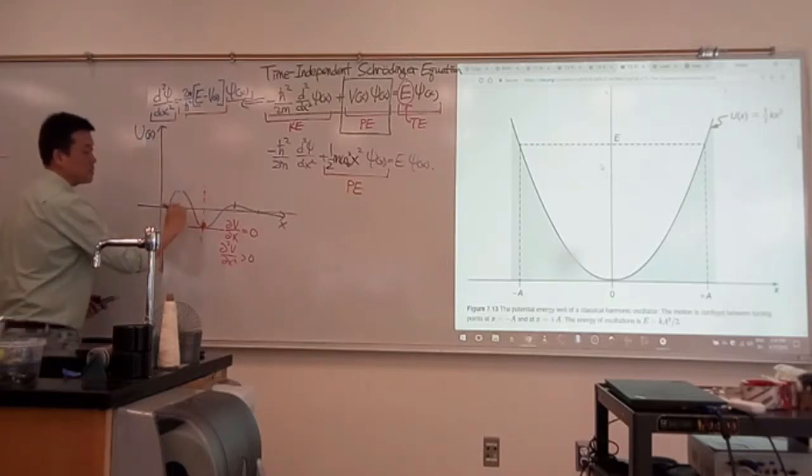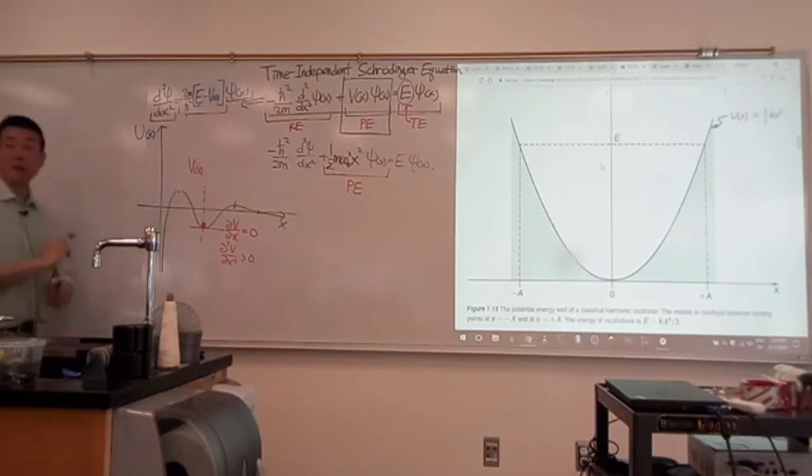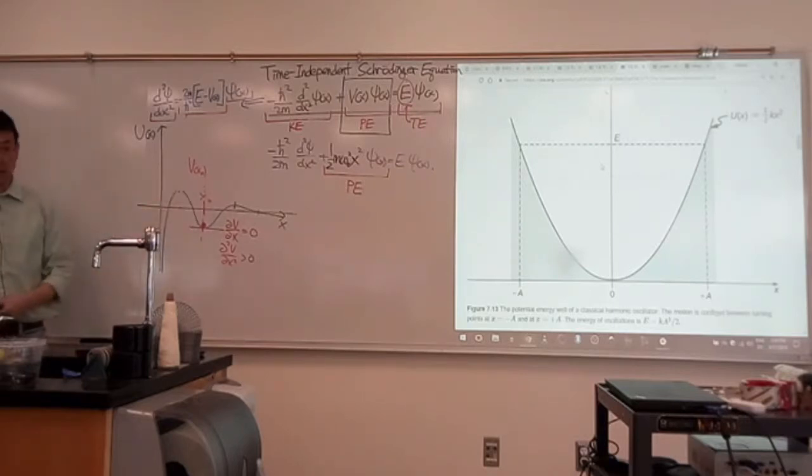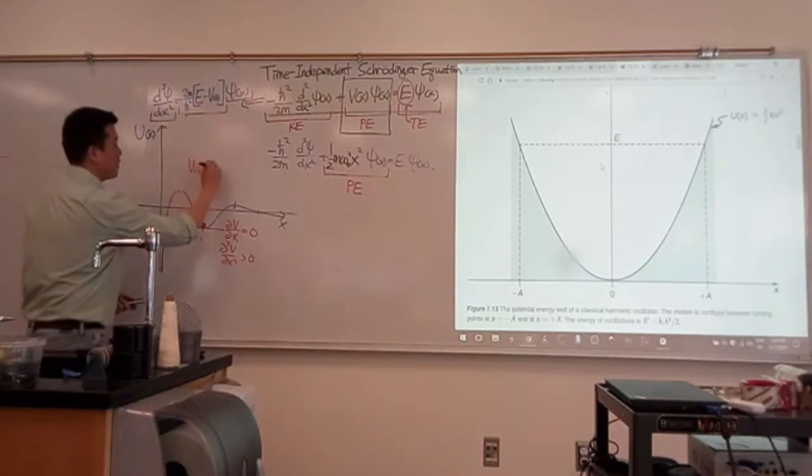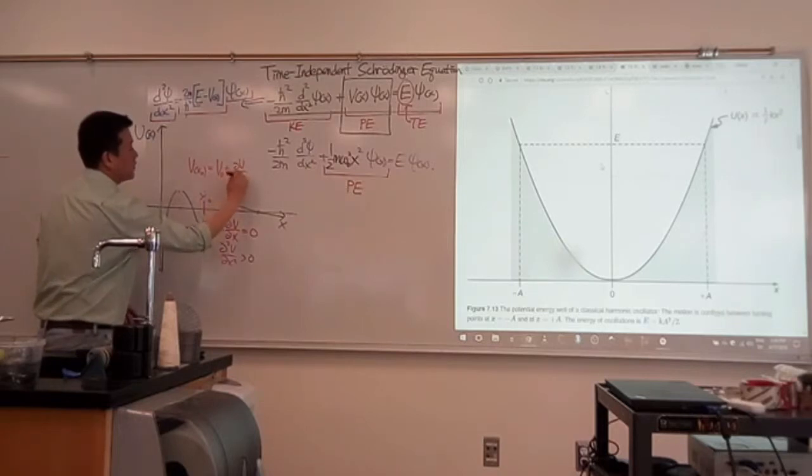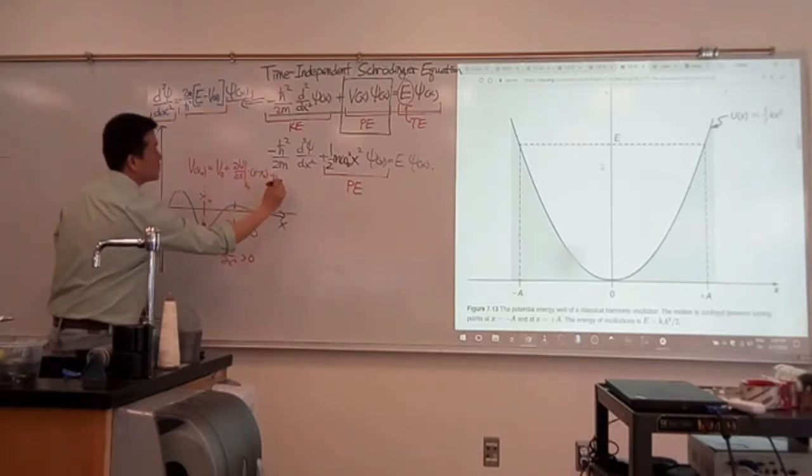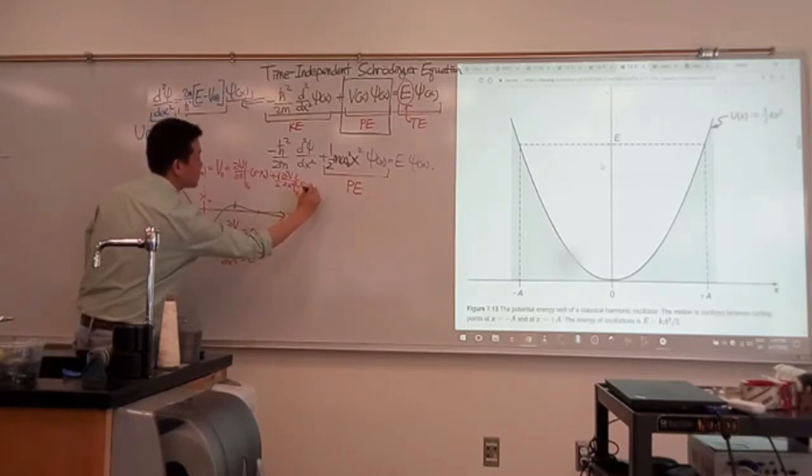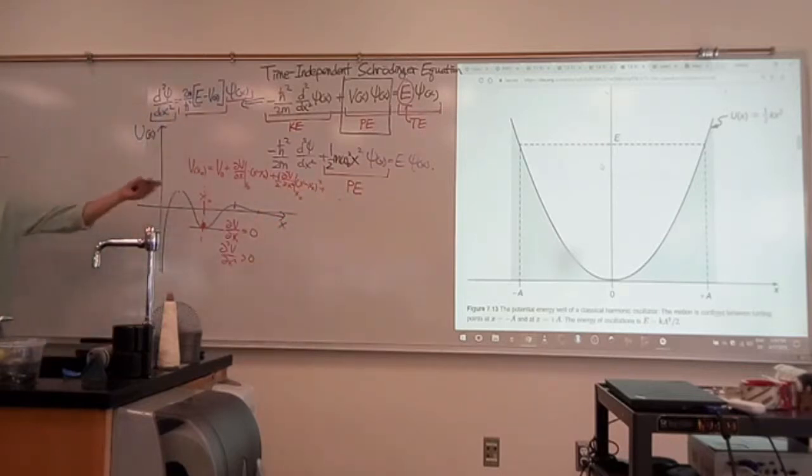So taking this potential—potential is a function of x, some complicated function—what you're going to do is expand it around x₀. Imagine doing a Taylor polynomial expansion around x₀. What that would look like is the constant V₀ plus the first derivative at x₀ times (x - x₀) plus the second derivative at x₀ times one-half (x - x₀)² plus and so on. That's the Taylor expansion.